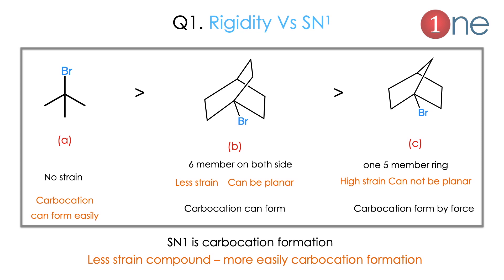Question 1: rigidity versus SN1. Three alkyl halides are given — A is a tertiary bromide, B is a bridged bromide with a six-membered ring, and C is a bridged bromide with a rigid five-membered system. A forms the cation most easily, so A has the highest rate. B is second because the six-membered bridged ring is less strained and can be somewhat planar. C is the least because the rigid five-membered system cannot form a planar carbocation. Less strain in the compound means easier cation formation.